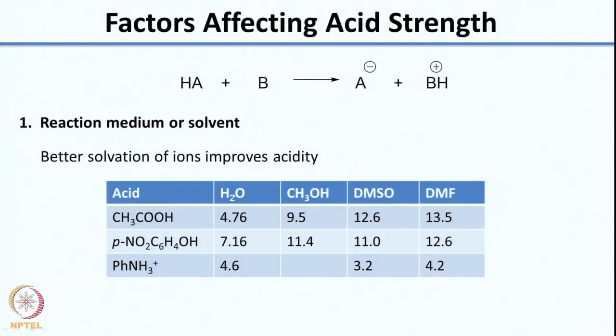This is the generic equation: you have an acid and a base, generating the conjugate base of the acid and conjugate acid of the base. One thing that has a major effect on pKa is the reaction medium. Most organic reactions are carried out in a solvent, and the solvent plays a very important role. When you compare the pKa of a neutral acid like acetic acid in different solvents, the pKa increases as you go from water to DMF.